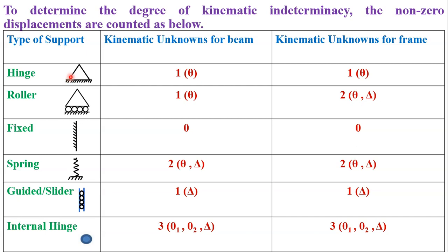We are using these supports in case of a beam as well as a frame. If a hinge support is there, the kinematic unknown for a beam is equal to 1, that is rotation theta or slope. Same is the case for a frame. Hinge support permits a single degree of freedom for beams as well as for frames.